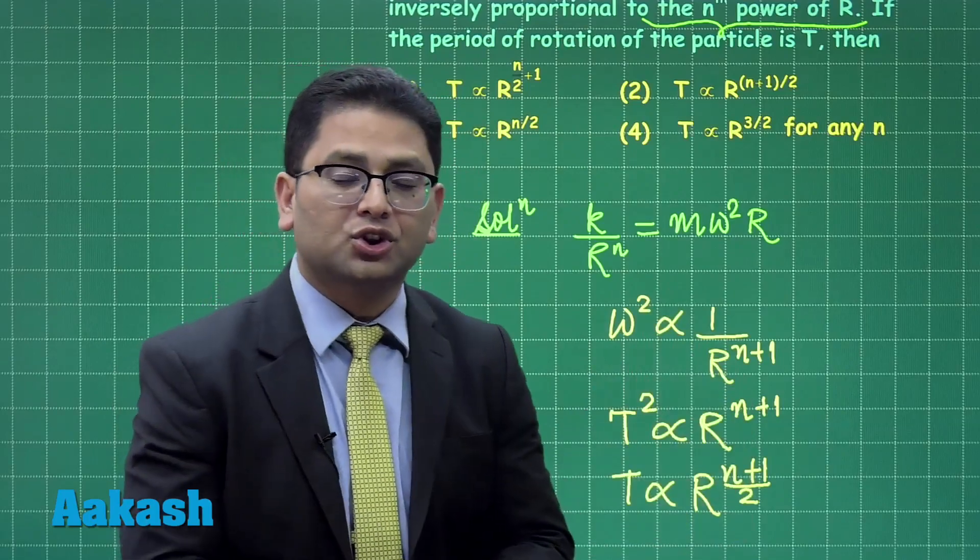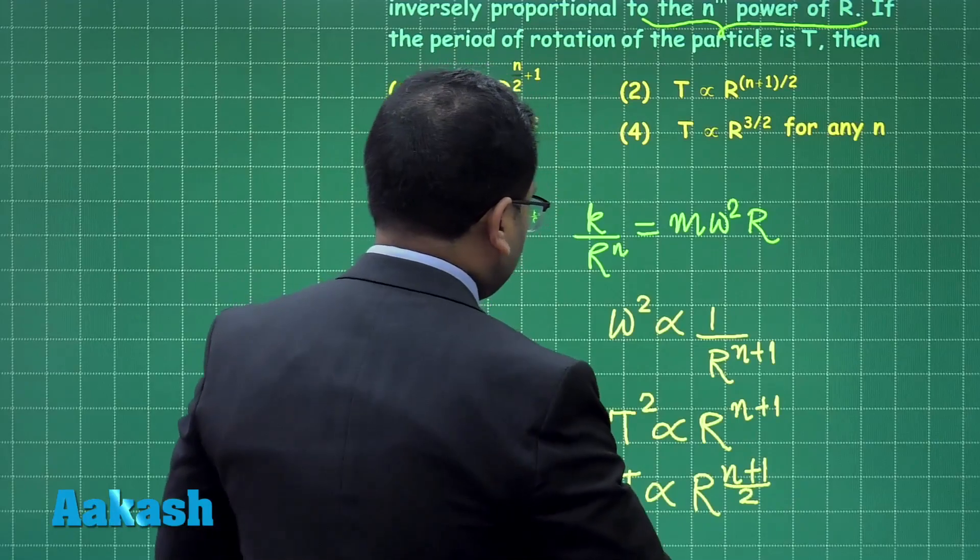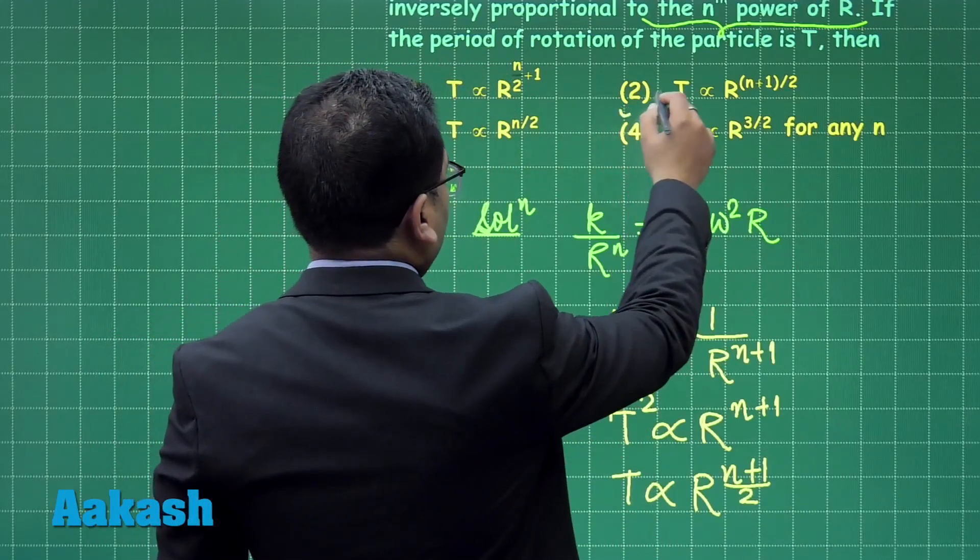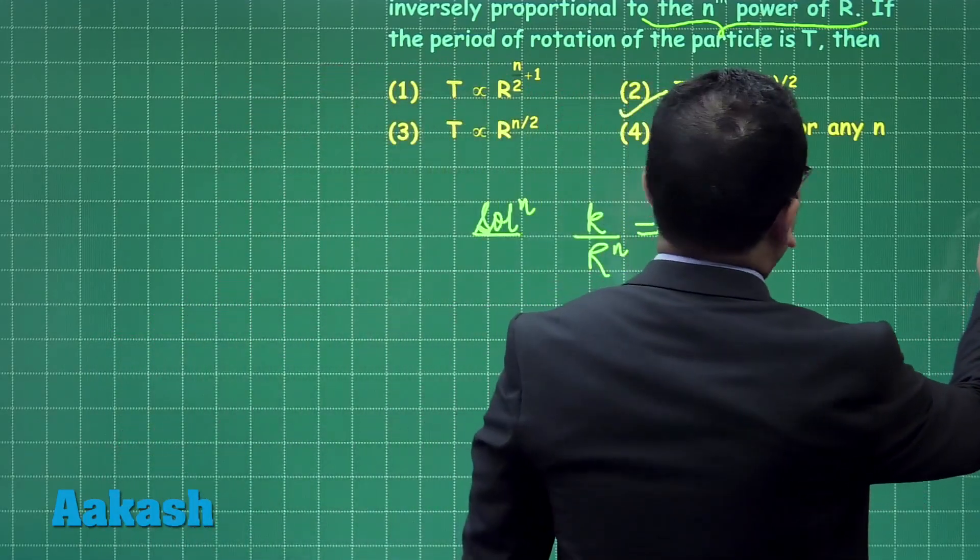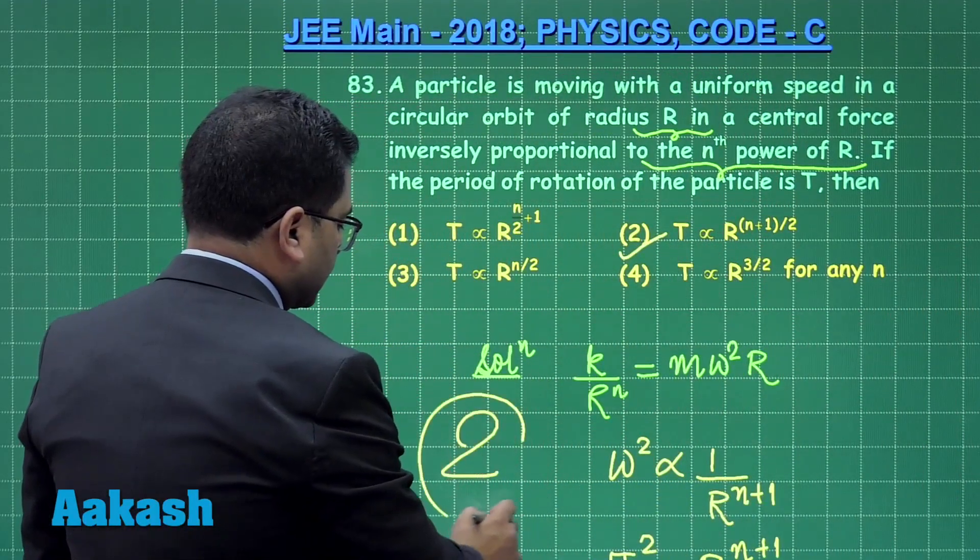T square directly proportional to r cube, just a way to compare. This now gives the correct option as option number 2. So for this particular question, question number 83, the correct option is option number 2.